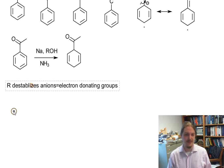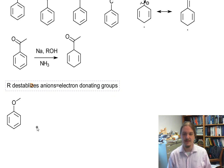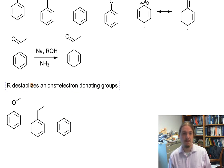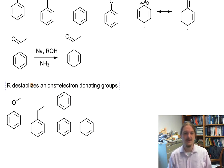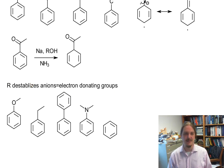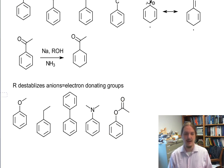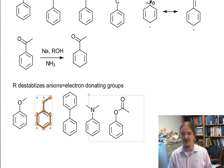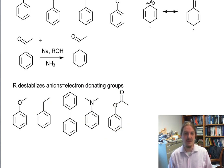What are electron donating groups? This includes alkoxy groups, alkyl groups, and perhaps non-obviously, other aromatic rings like in biphenyl. Amines. And even some carbonyl functional groups like esters, so long as the ester is not attached at the carbonyl carbon but on the other side through the oxygen. All of these things are electron donating by induction or resonance, and all of these things react under the Birch conditions to form the other regioisomer.